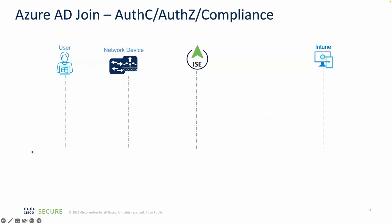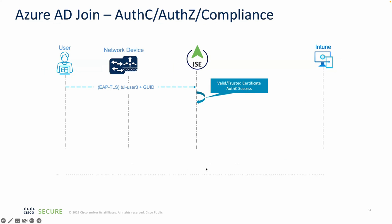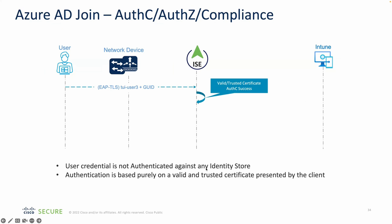With a pure Azure AD join, there's no machine account to authenticate against on-prem AD. The user authenticates to the network using EAP-TLS with the user credential and GUID. Since ISE can't check the credential against an external identity store, it authenticates the session based on the certificate being valid and trusted, then performs a compliance check against Intune as part of authorization.